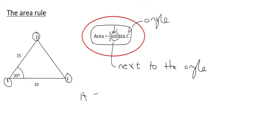So the area of this triangle would be equal to a half. Now, the angle we're going to use is the 30, and so the two sides that we would multiply would be the 15 and the 10. Doesn't matter which order you do that.